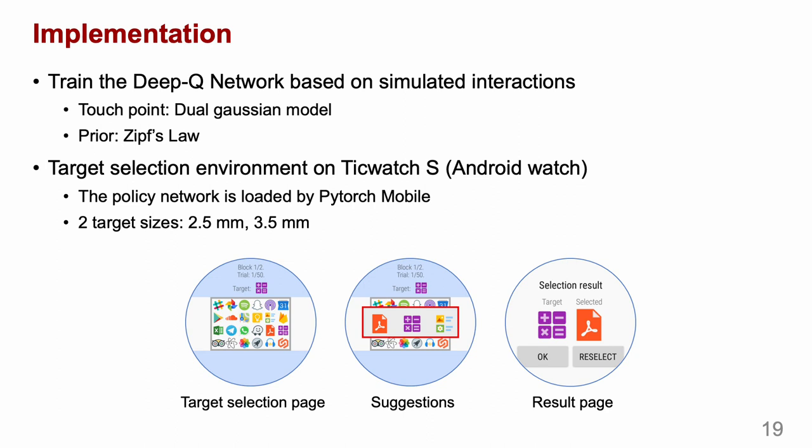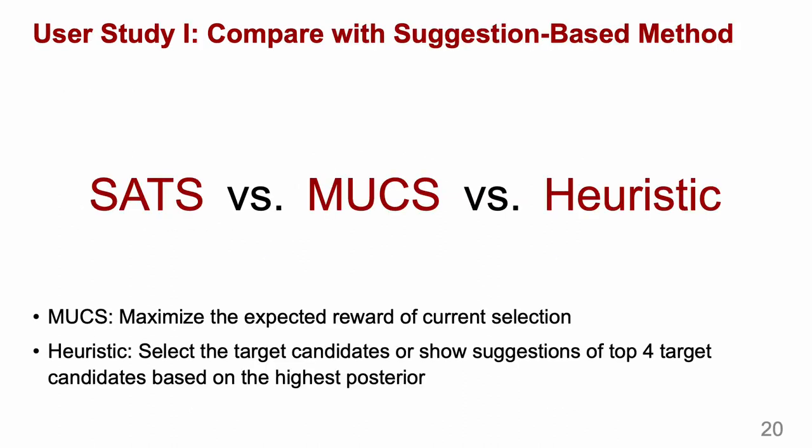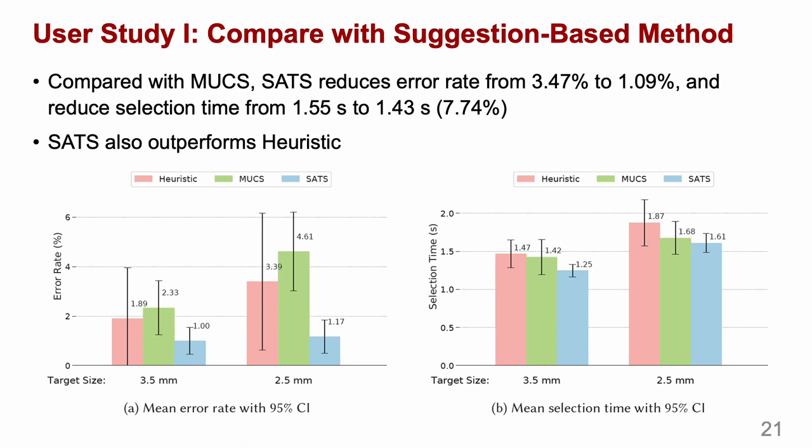We conducted three user studies to evaluate the performance of SETS. We first compared SETS with the suggestion-based method MUCS and a heuristic method. The heuristic method decides to select a target candidate or show suggestions of the top four targets based on the highest posterior. The results show that SETS has the lowest error rate and shortest selection time among the three methods.